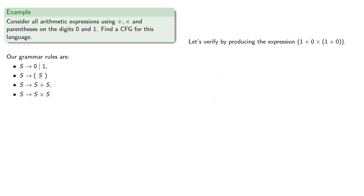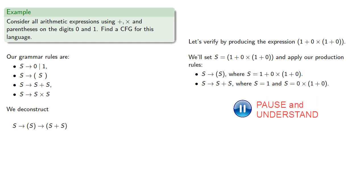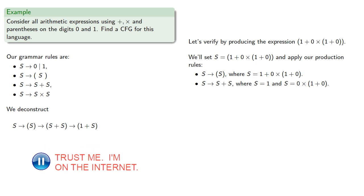Let's verify by producing the expression (1 + 0 × (1 + 0)). We'll initialize and set our start variable to the entire expression and apply our production rules. First, S produces something in parentheses, where our new S is what was in the parentheses. Then S produces a sum, where the first S in the sum is 1, and the second S is the remaining part of the expression. That first S is a terminal symbol, so we can just replace it.